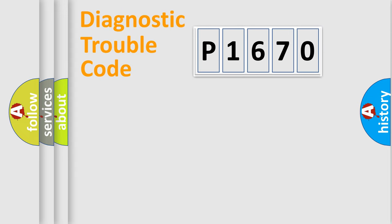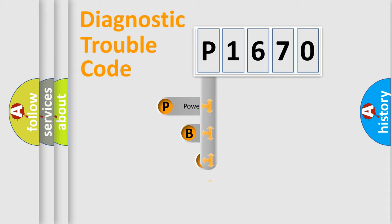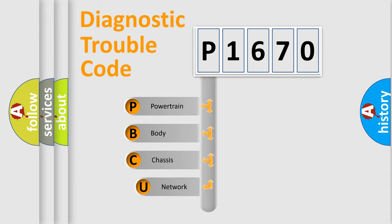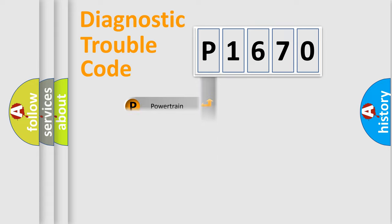Let's do this. First, let's look at the history of diagnostic fault code composition according to the OBD2 protocol, which is unified for all automakers since 2000. We divide the electric system of an automobile into four basic units: Powertrain, Body, Chassis, and Network. This distribution is defined in the first character of the code.